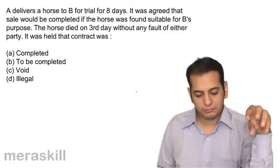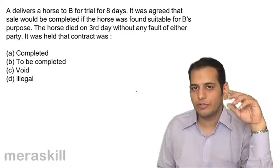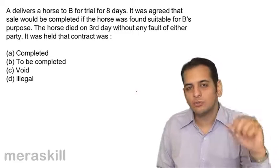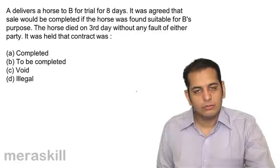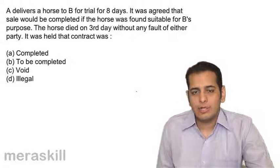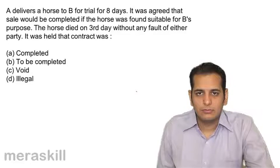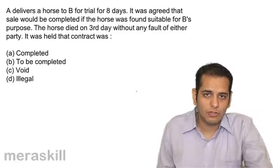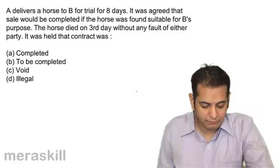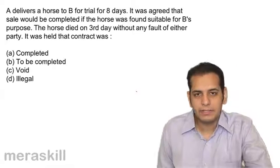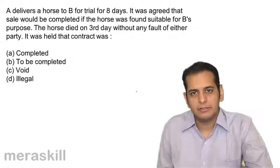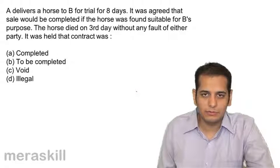A delivered a horse to B for trial for 8 days, and in those 8 days B would see if the horse suits his needs or not. On the third day the horse died. What would be the status of the contract — completed, yet to be completed, void, or illegal? In this case the contract becomes void.